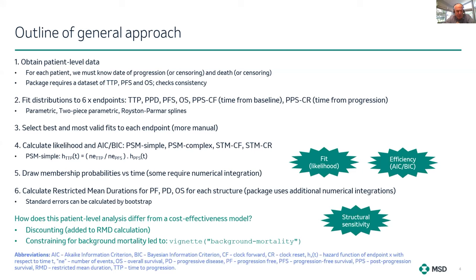The package also models pre-progression death and post-progression survival under clock forward and clock reset formulations. The user then selects which fits to use for each of the endpoints — that's deliberately slightly manual because it's quite an important choice. After that selection, the package calculates the likelihood, AIC, and Bayesian information criteria statistics for the four model structures: clock forward and clock reset state transition models, and simple and complex partition survival models.